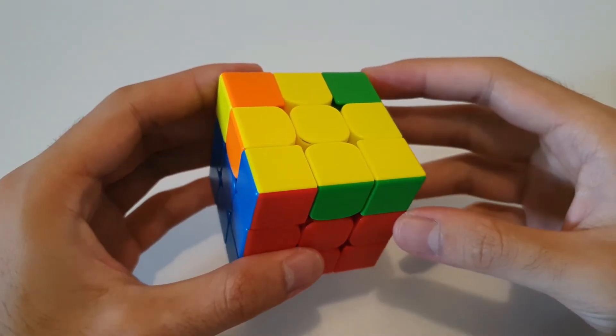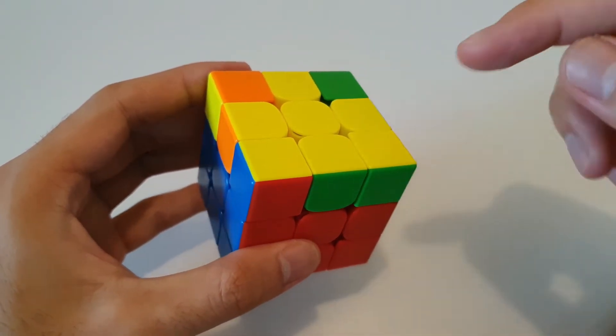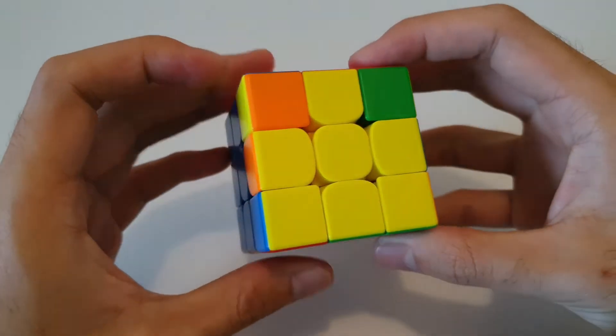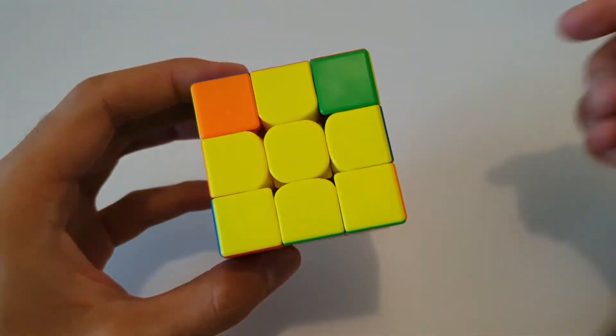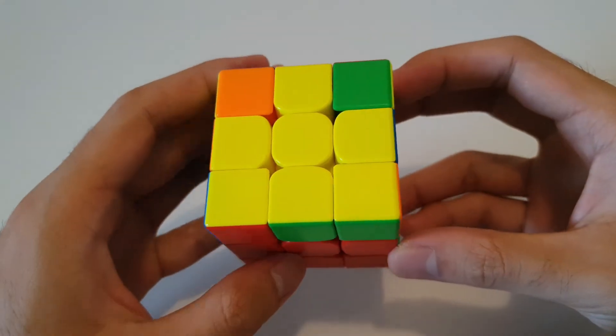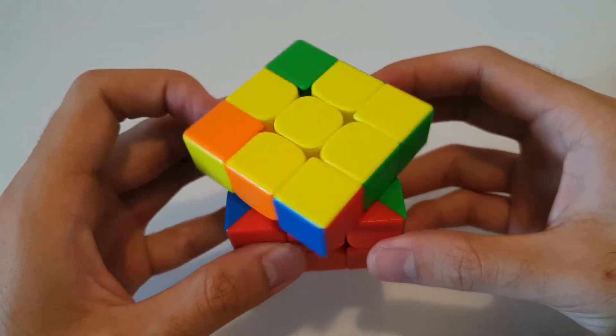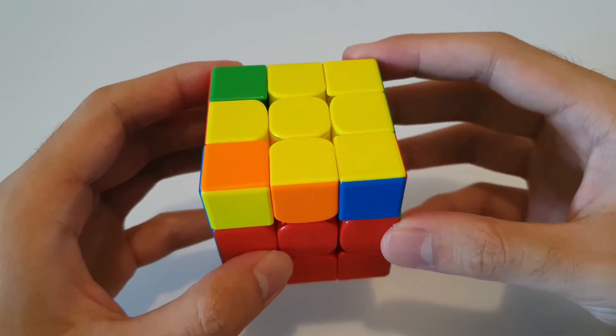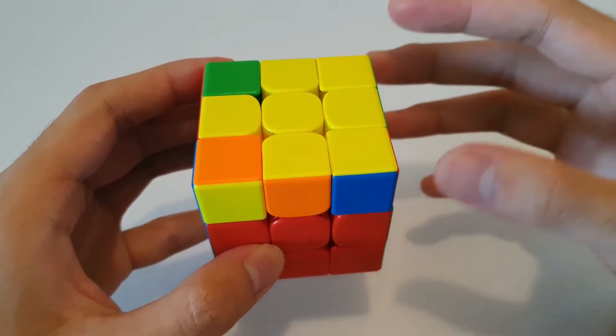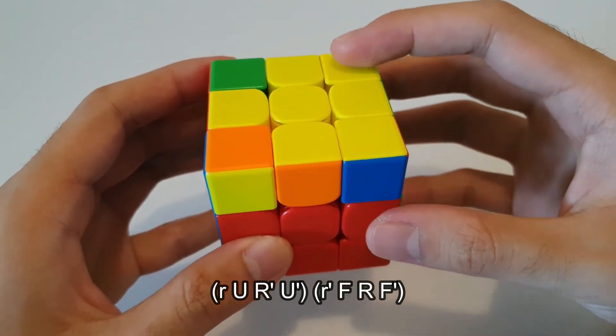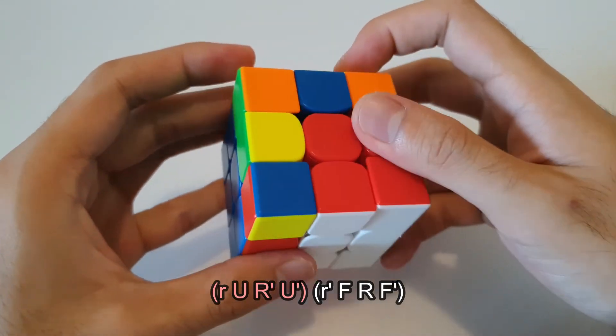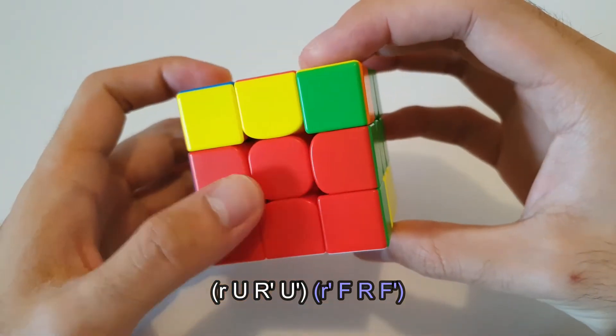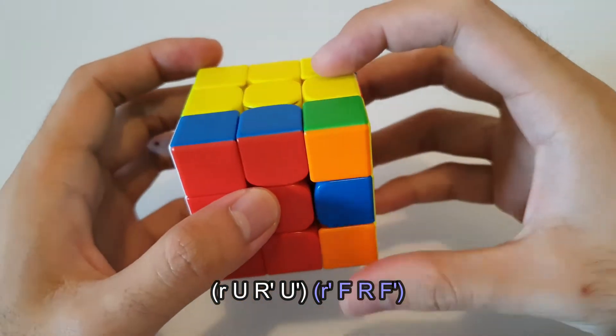So the next case that you can get is this one here, and it's recognized by two corners being oriented, and the other two unoriented corners have yellows facing outwards like this, so it kind of forms a T shape. For this case, you want to hold it so that the two unoriented corners are on the left side, and the algorithm for it is actually fairly easy to remember, it's wide sexy sledge. So the algorithm starts off with a wide R move, followed by the rest of the sexy, followed up with a wide R', followed by the rest of the sledge.